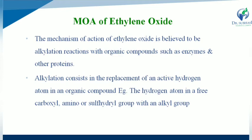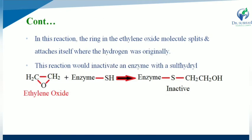Alkylation consists in the replacement of active hydrogen atoms in an organic compound — for example, hydrogen atoms in free carboxyl, amino, or sulfhydryl groups — with an alkyl group. The ring in the ethylene oxide molecule splits and attaches itself where the hydrogen was originally.